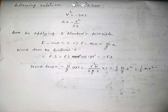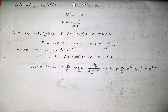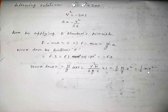The work done is −Fs = −(W/g)·a·s. Substituting a = −V²/2s, the negative terms cancel and we obtain ½·(W/g)·V², which equals ½mV². Therefore the mathematical expression for kinetic energy is ½mv².